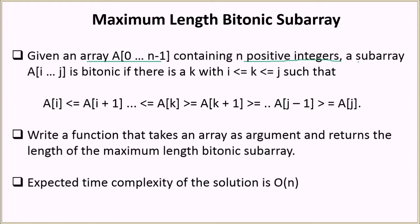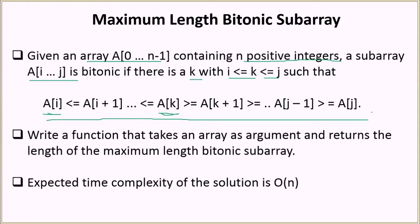We say an array from index i to j is bitonic if there exists a k, where i is less than or equal to k which is less than or equal to j, such that a certain condition holds. So you have an element at index k, an element at index i, and an element at index j. Going from i towards k, the elements are increasing — element at index i+1 is greater than or equal to element at index i — and they keep increasing or remain the same until you reach element at index k.